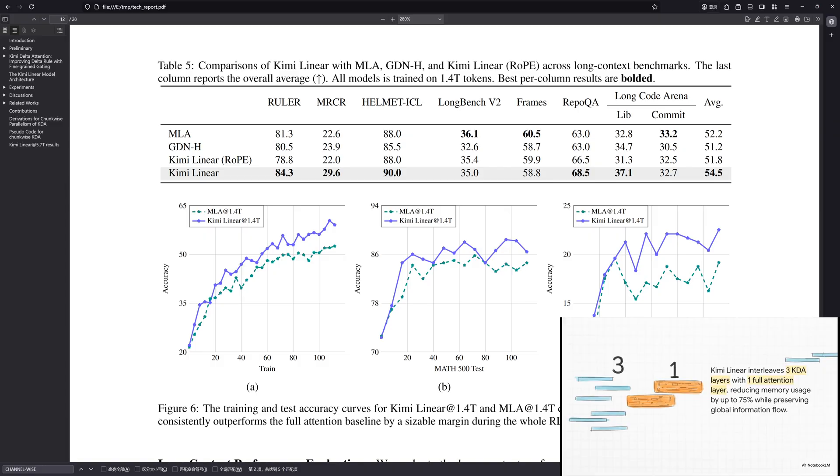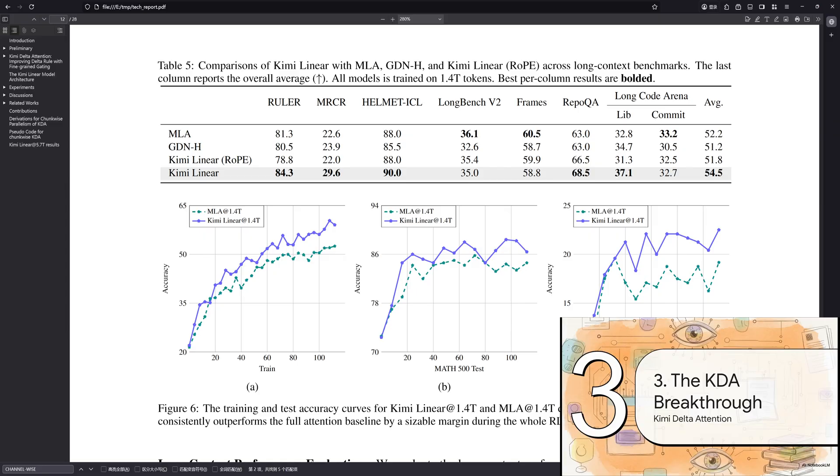And they've got it down to a pretty specific formula. For every one layer of that classic, heavy-duty attention, they slot in three layers of their new, super-efficient, linear attention. This simple design choice has a huge impact. It can cut down the memory needed by up to 75%, all while making sure the really important, big-picture information can still move freely through the model.